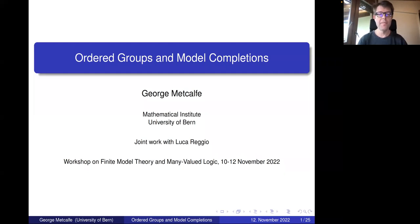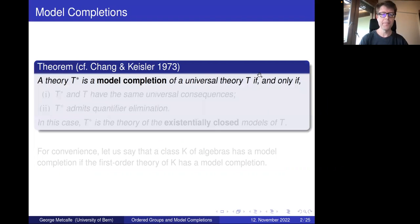The topic of my talk today lies somewhat at the intersection of model theory and many-valued logic. More precisely, I want to speak about ordered groups or ordered structures that provide algebraic semantics for many-valued logics, and also model completions, which are a familiar notion of model theory introduced by Robinson in the 1950s.